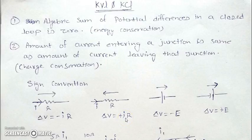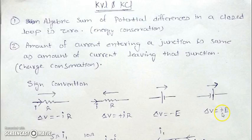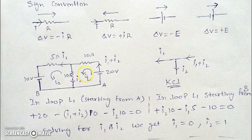The potential increases by IR when crossing opposite to current. If we cross a battery from its positive to negative terminal, the change is minus E, where E is the EMF. If we cross from negative to positive terminal, it will be plus E. The final terminal of the battery decides the polarity. Remember: in the direction of current it's minus IR, opposite the direction of current it's plus IR.